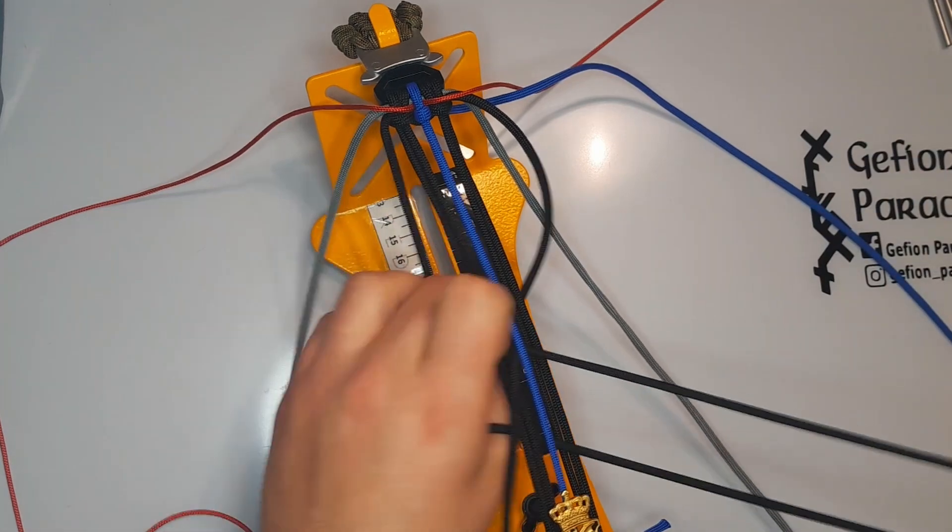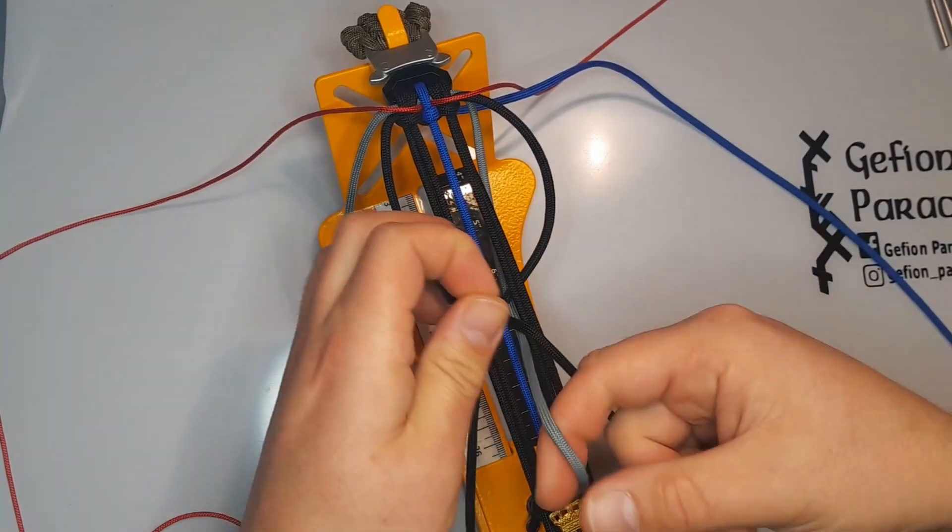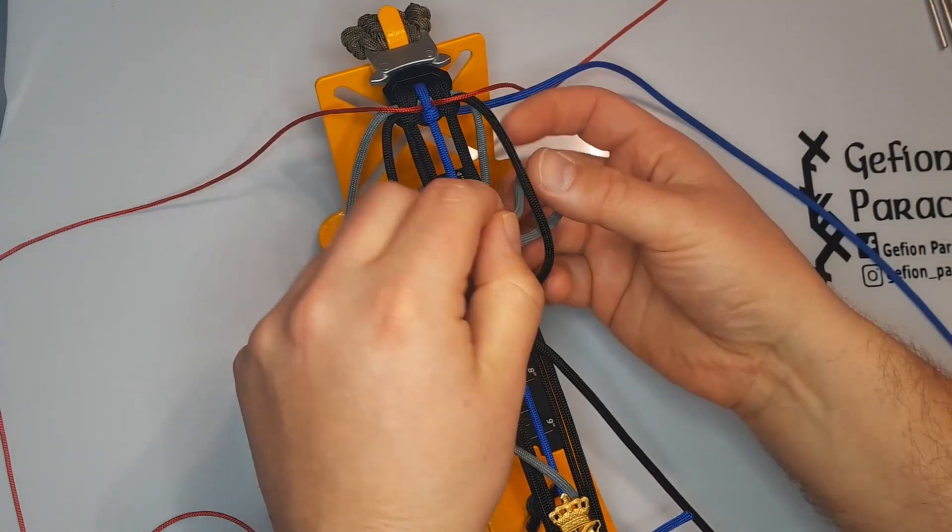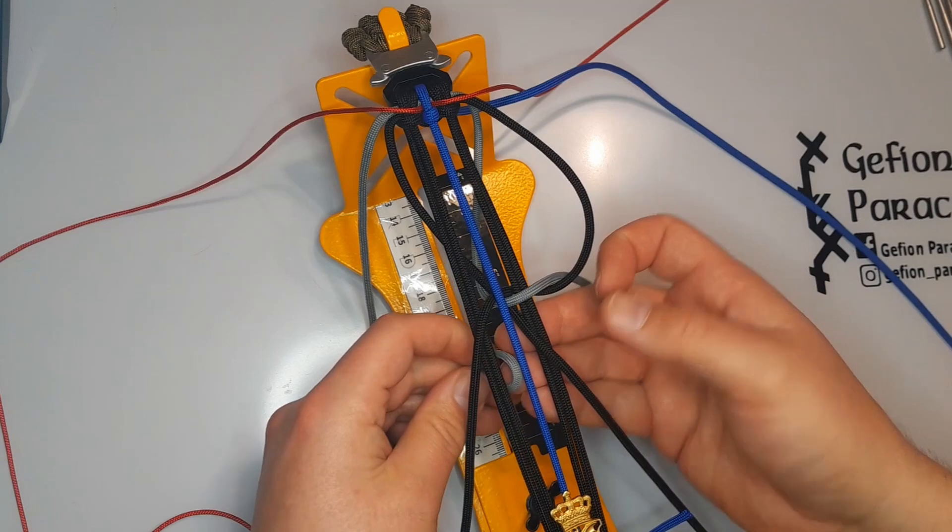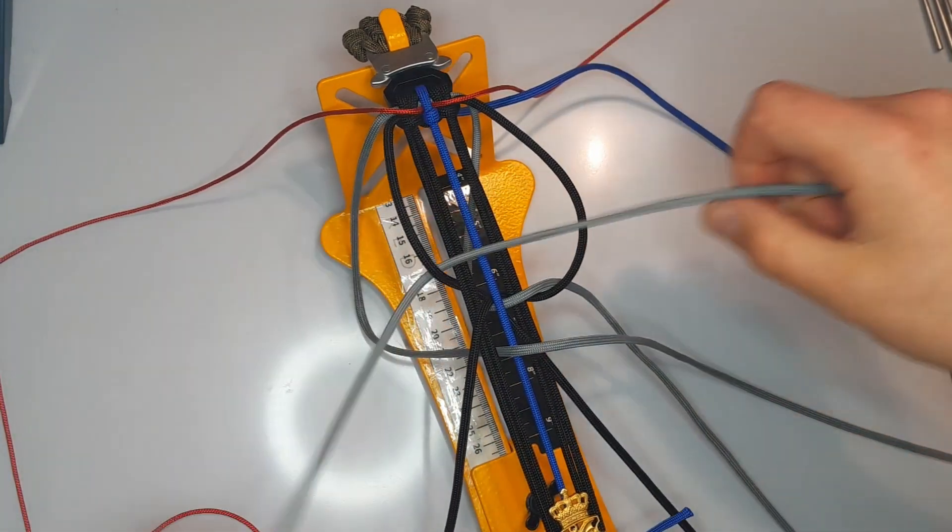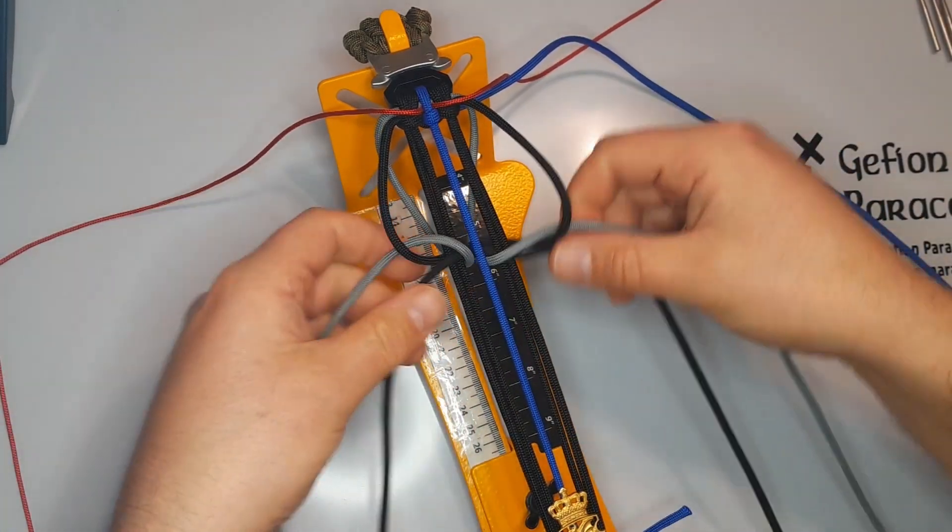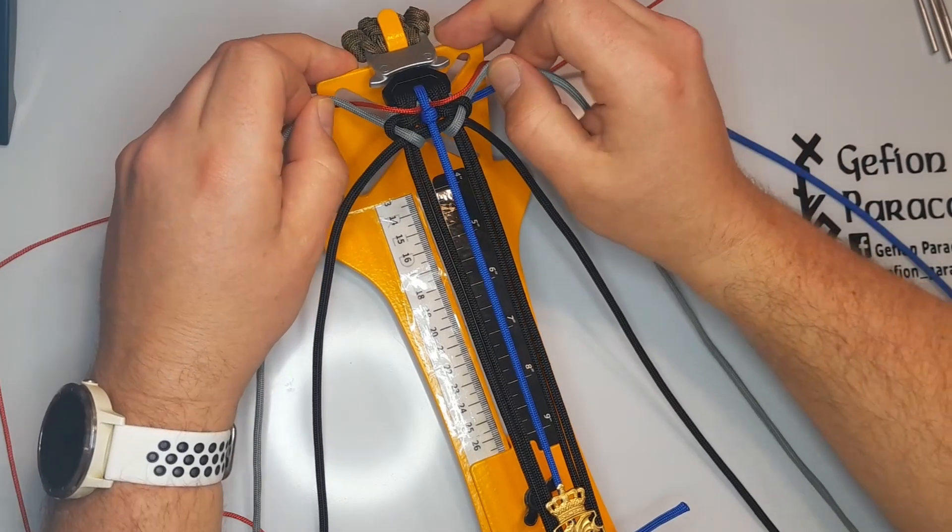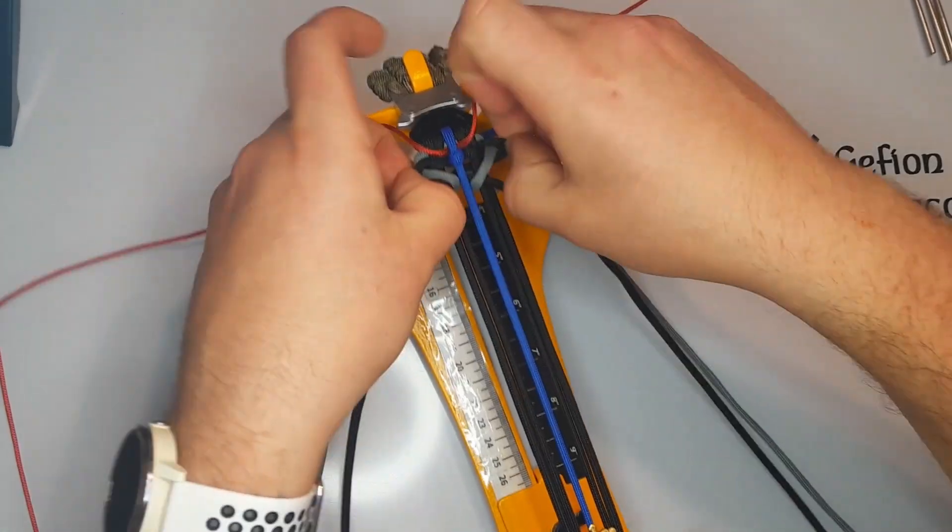So I go under, under, and under the center strand, and over and over, and then repeat the process in reverse. Then I go under, under, and over, and through the loops. Like so. Just making sure everything is functioning. Now time to tighten a bit.